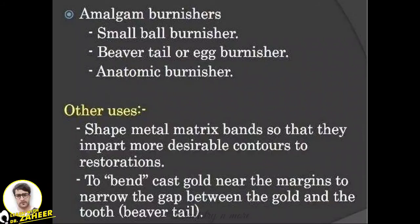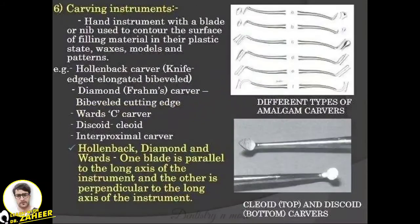Carving instruments are hand instruments with a blade or nip used to contour the surface of filling material in its plastic state. Types include the Hollenbach carver, which is knife-edged and elongated with a bevel; the diamond carver; the Wadsun carver; discoid-cleoid; and proximal carver. For Hollenbach and diamond carvers, the blade is parallel to the long axis of the instrument, while for others it is perpendicular.